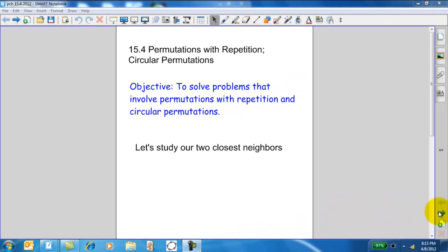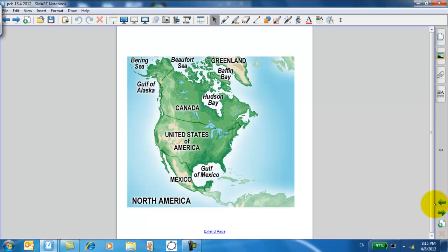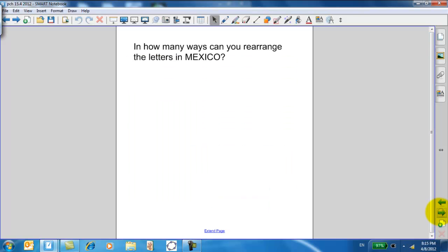Hello, PreCalcHounder students. Here we are with Permutations with Repetition and Circular Permutations. Let's start off by studying our two closest neighbors, Canada and Mexico. First, start with Mexico.